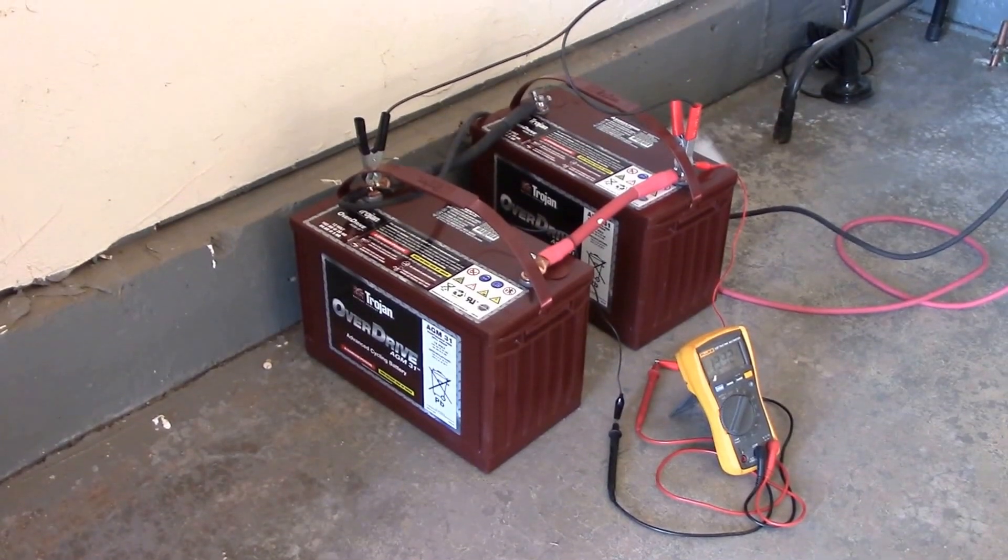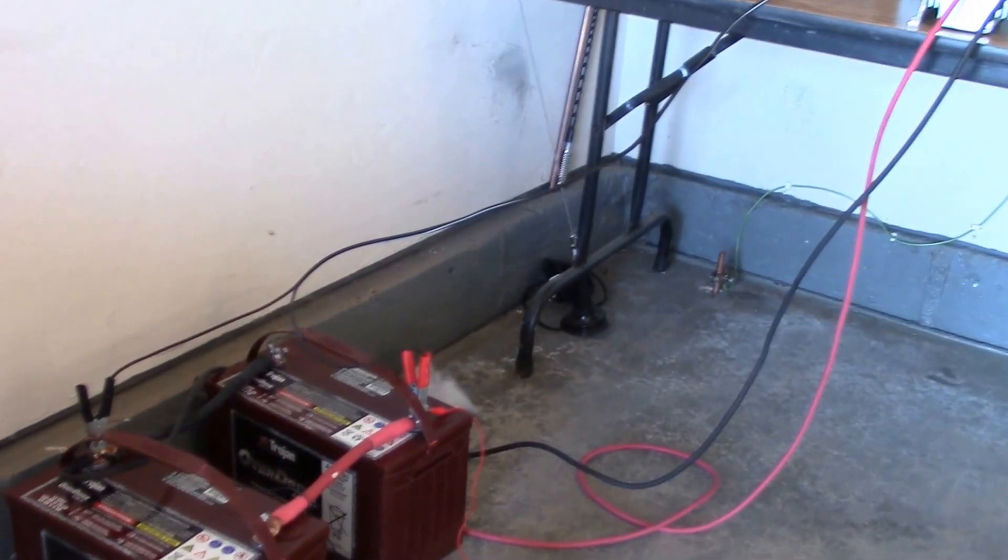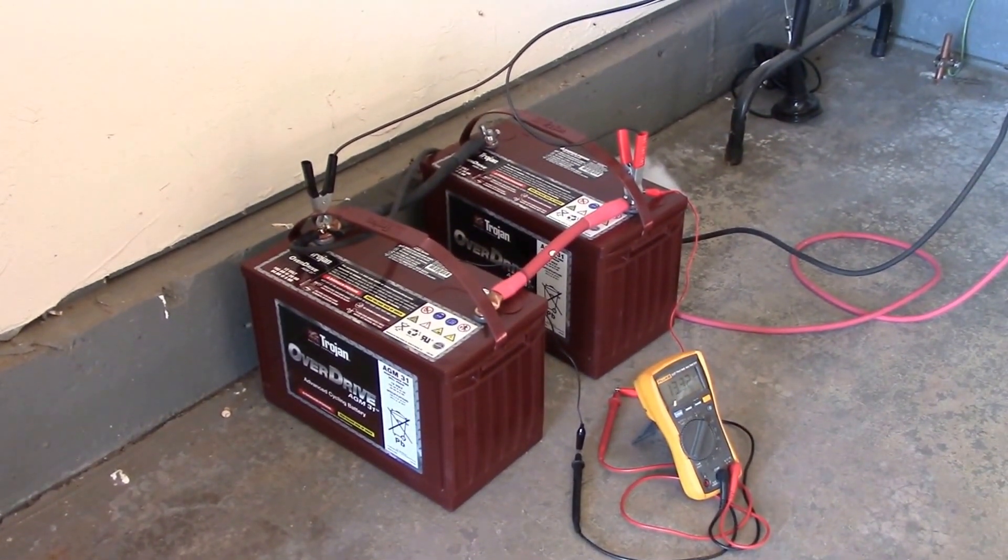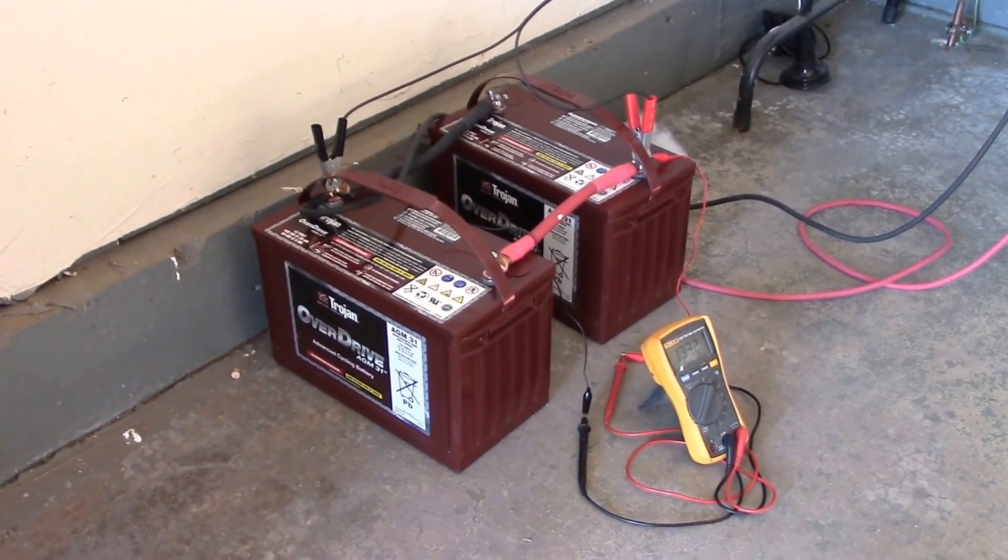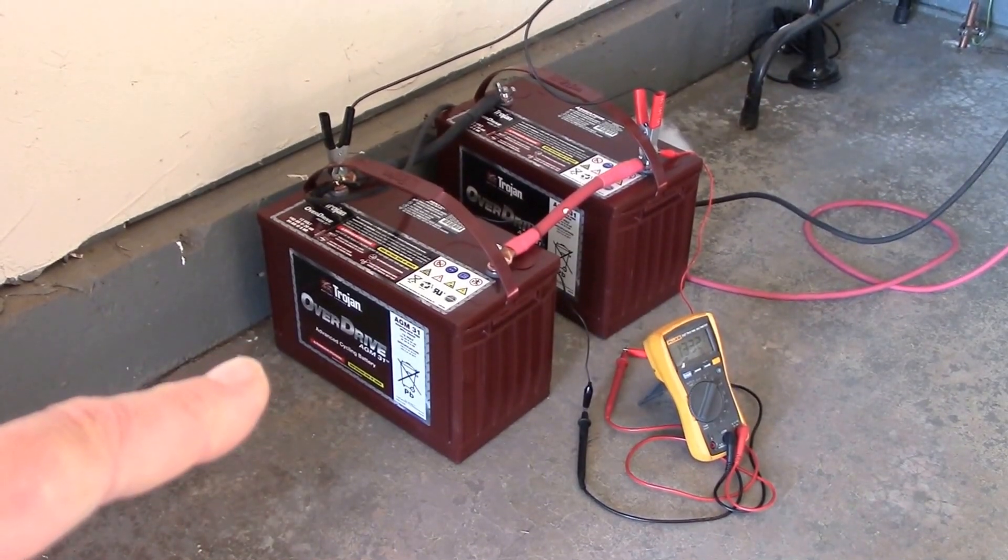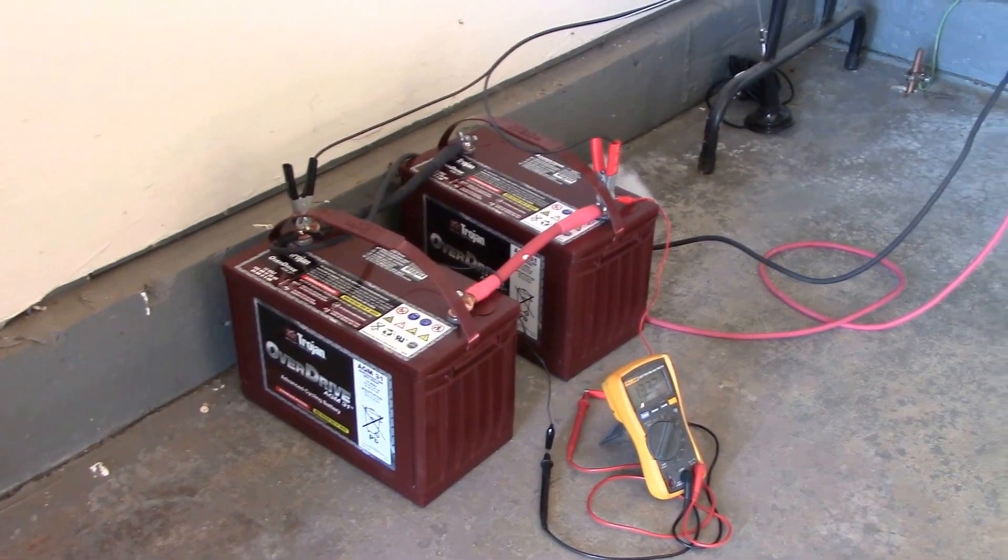One thing I just learned is that AGMs are very specific on how much charge. You can very easily overcharge an AGM battery, and I looked up the spec sheets on here and it's like 14.8 volts charging. So I figured, well okay, I've got a 12-volt battery charger.